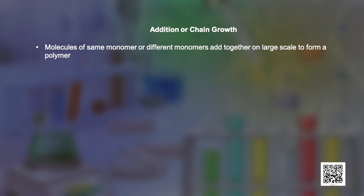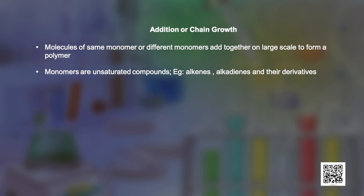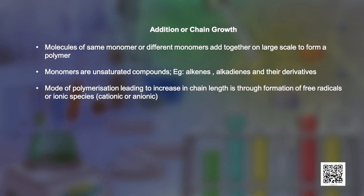We will first talk about addition or chain growth polymerization. Here the molecules of the monomer or different monomers add together on a large scale to form a polymer. The monomers used are unsaturated compounds, mainly alkenes or alkadienes and their derivatives. This mode of polymerization leading to chain growth can take place through the formation of either free radicals or ionic species, which can be cationic or anionic in nature.